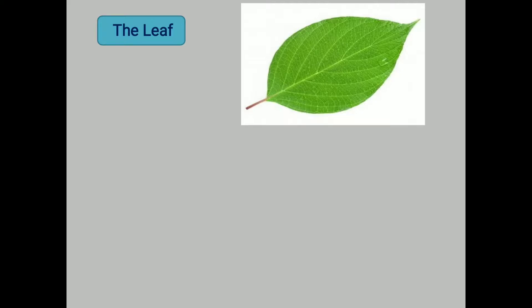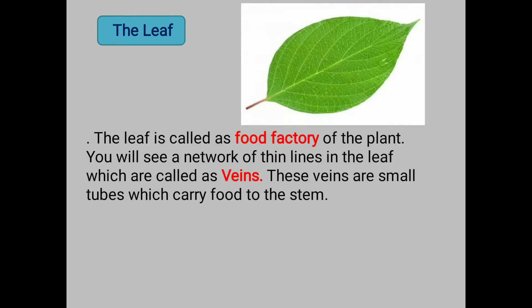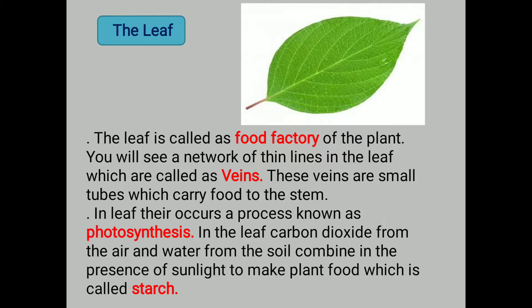The leaf is called the food factory of the plant. You will see a network of thin lines in the leaf which are called veins — these are small tubes which carry food to the stem. In the leaf there occurs a process known as photosynthesis. In photosynthesis, carbon dioxide from the air and water from the soil combine in the presence of sunlight to make plant food, which is called starch. This process of manufacturing food for the plant is known as photosynthesis.